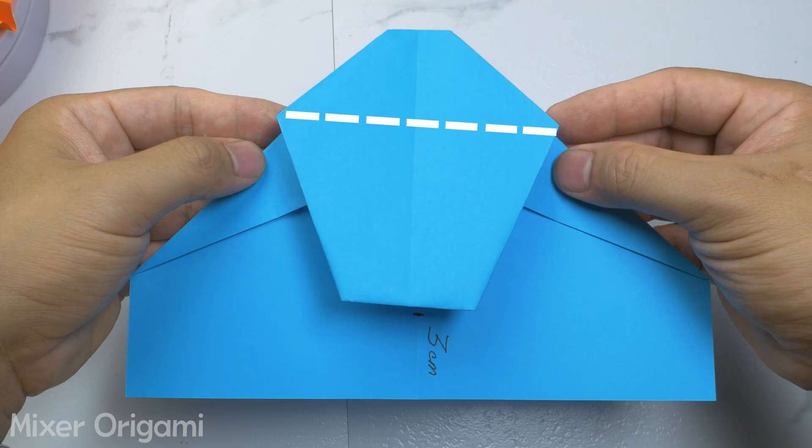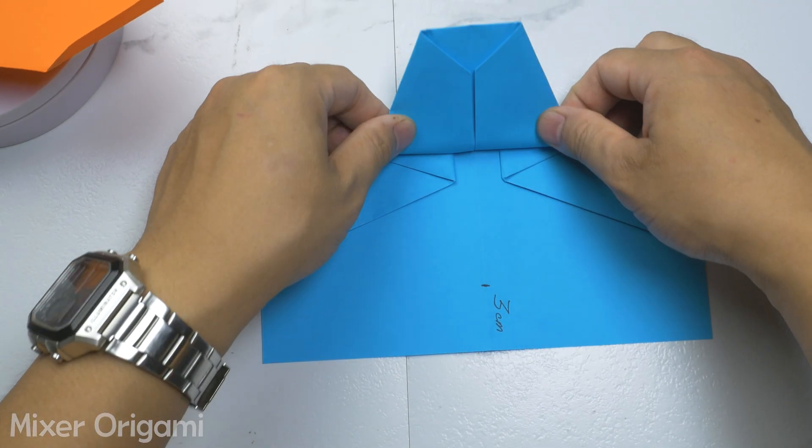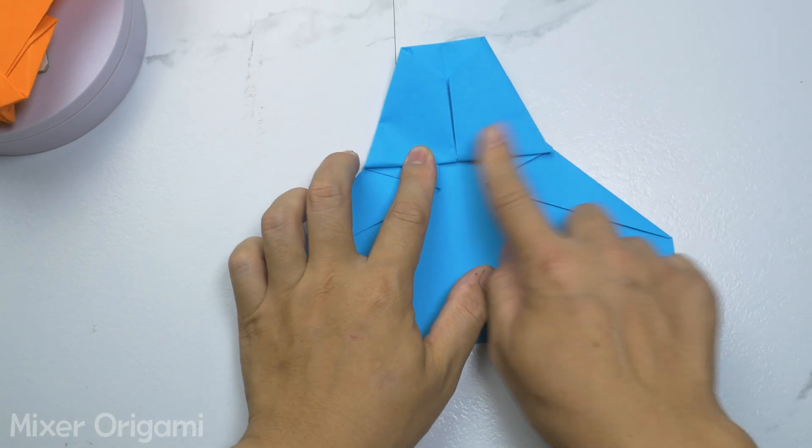Step 9. Fold the bottom part of the airplane up at the dotted line on the video. Then flatten the airplane to avoid wrinkles in the paper.